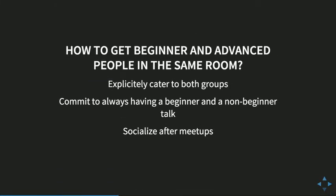So how do we get both groups — the beginners and the people who do know — in the same room at the same time? What we did with New York Haskell is we decided to explicitly cater to both groups. We committed to always having a beginner and a non-beginner talk at every one of our meetups. There were previous Haskell-related meetups in New York that I don't think did this as well, but we wanted to focus on this and I think it really was a big help.